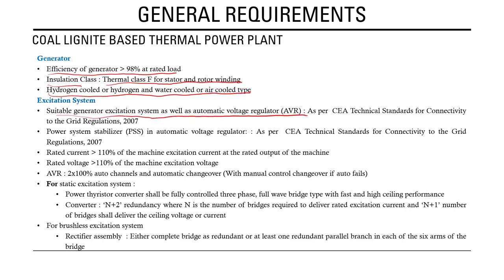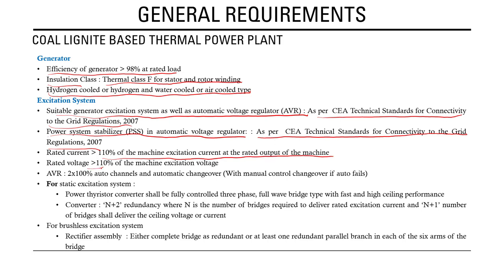The excitation system rated voltage should be more than 110 percent of the machine excitation current at rated output, and 110 percent of the machine excitation voltage. The AVR should have two channels providing 200 percent redundancy, with automatic changeover in case of channel failure and also manual control. Either static excitation or brushless excitation systems can be used.